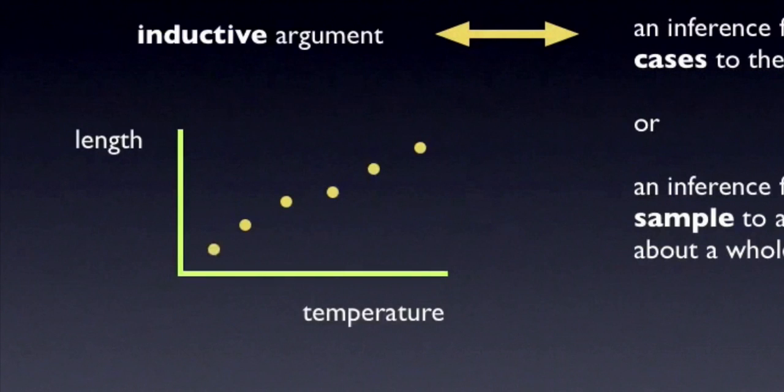Another example that illustrates inductive reasoning in this sense is the reasoning involved in inferring a functional relationship between two variables based on a finite set of data points. Let's say you heat a metal rod, and you observe that it expands the hotter it gets. So for various temperatures, you plot the length of the rod against the temperature, and you get a spread of data points that looks like this.